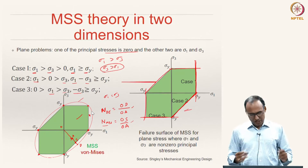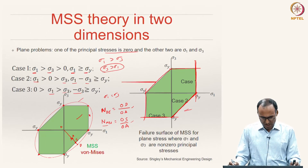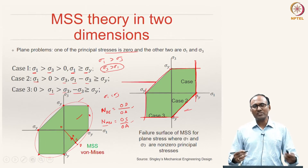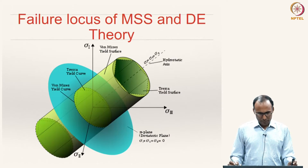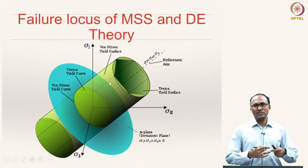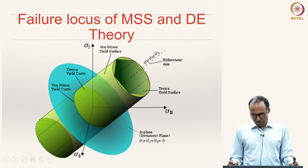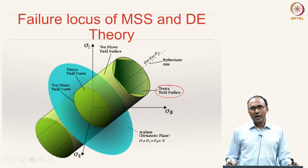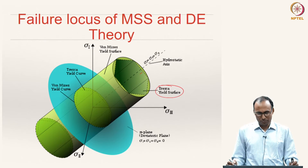Both distortion energy theory and maximum shear stress theory seem to work very well for ductile materials and represent failure phenomena reasonably well compared to experiments. In 3D, the maximum shear stress theory (Tresca-Guest theory) represents a hexagonal cylinder inclined at 45 degrees to the sigma 1, sigma 2, sigma 3 planes.